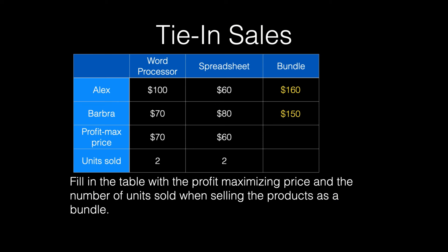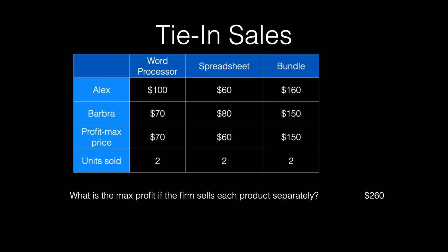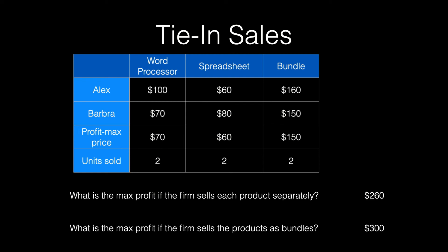The firm has a choice to sell the bundle for $150 or $160. If it chooses to sell the bundle for $160, then only Alex will buy and the firm will earn $160. If the firm chooses to sell the bundle for $150, then the firm will be able to sell two bundles, earning a total of $300. So $150 as the bundle price is the profit-maximizing price. Recall that the maximum possible profit the firm could earn selling the products separately was $260. Now bundling the products, the firm can earn $300.